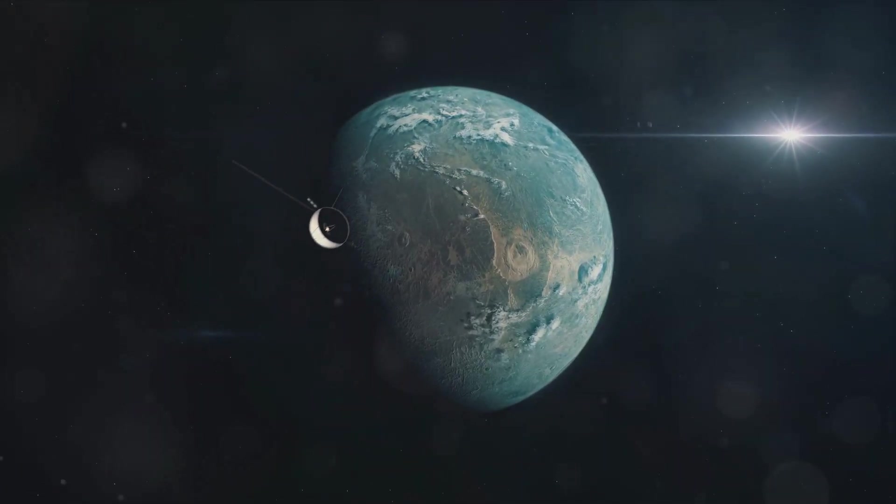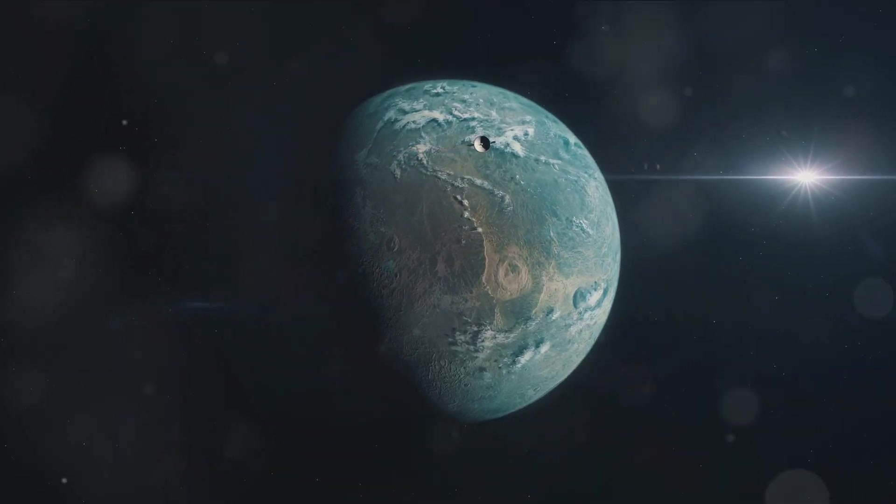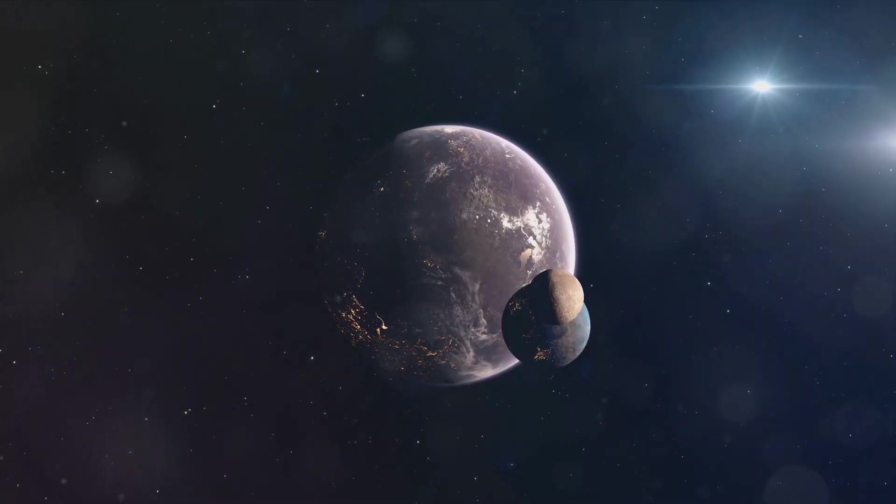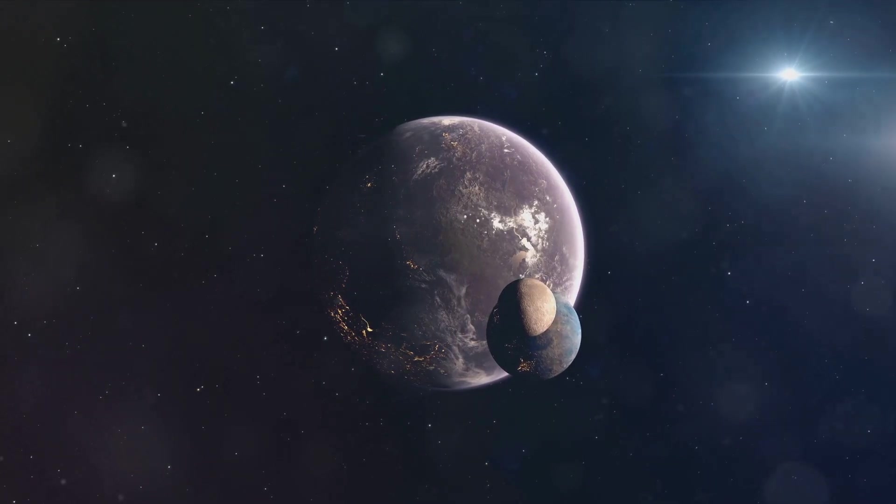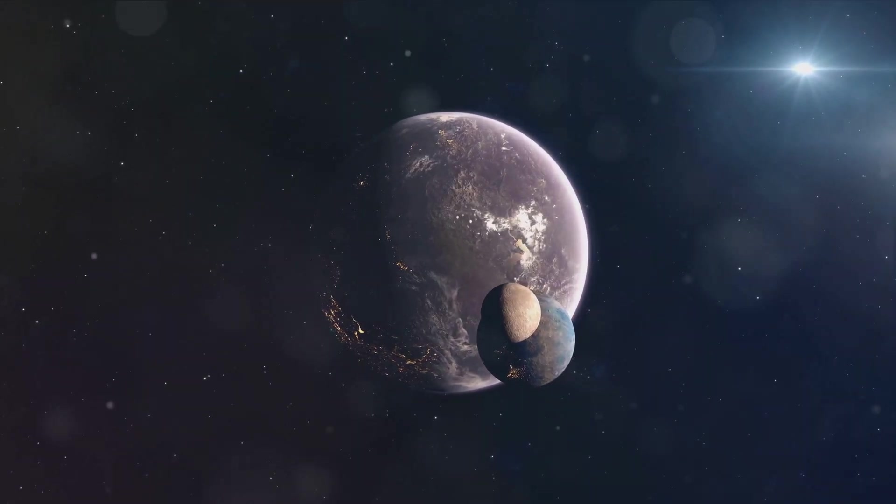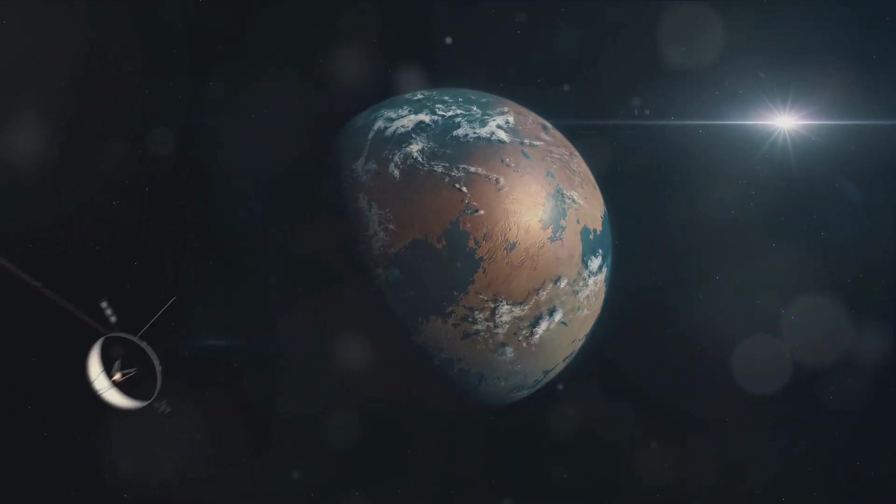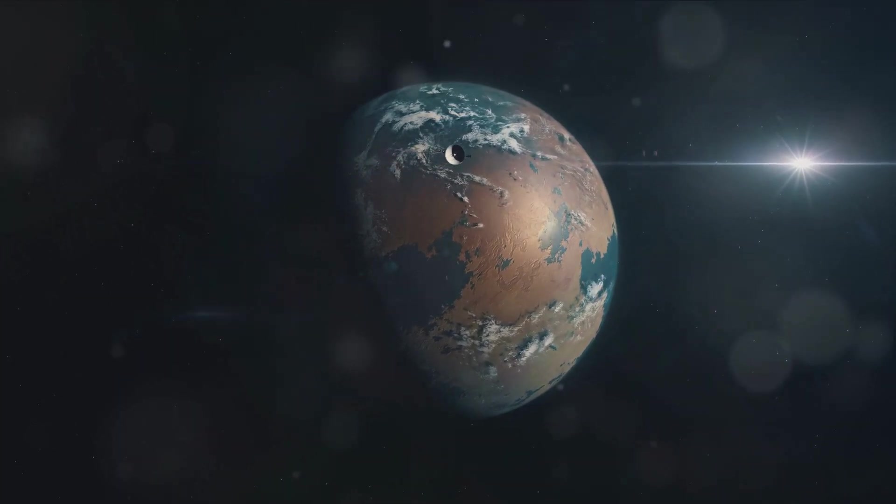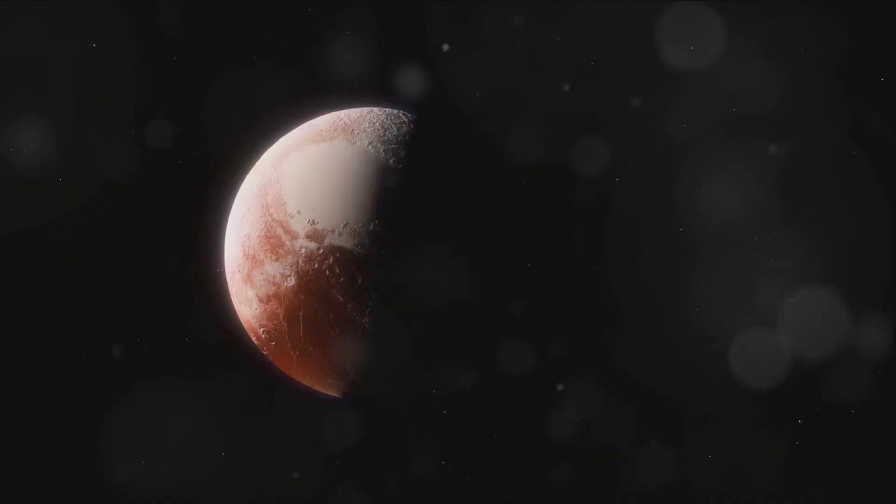Moving on, we come to Kepler 385g. This planet is the second largest in the system, only slightly smaller than 385e. It completes an orbit every 265 Earth days. This planet is particularly interesting as it's located in what's known as the habitable zone of its star, where conditions might be just right for liquid water to exist. However, being a gas giant, the chances of finding solid ground, let alone life, is slim.